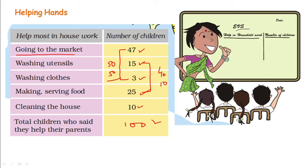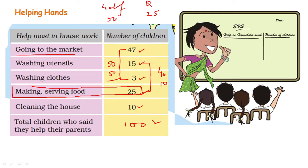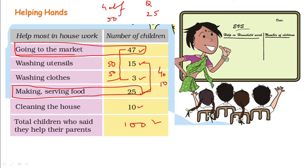What is half of 100? Half of 100 is 50, and a quarter of 100 is 25. Making and serving food is done by 25 children, which is a quarter of 100. Going to market was said by 47 children, which is slightly less than half of the total children.